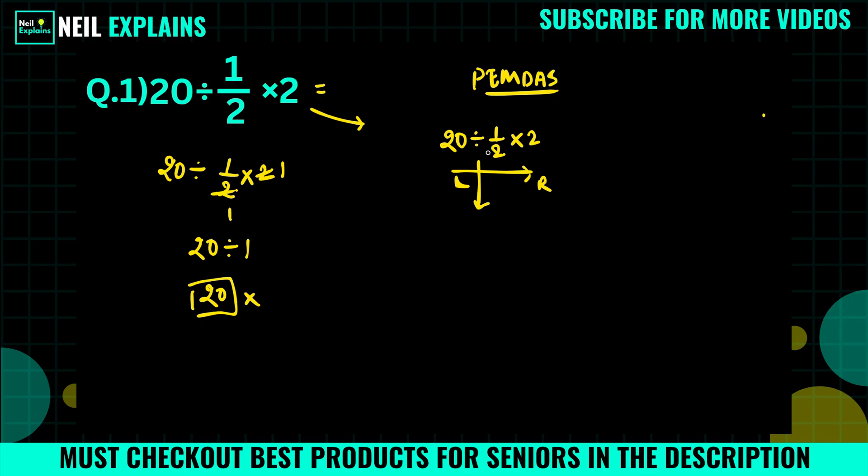Then first we have to solve for this operation: 20 divided by 1/2. To solve this, what we have to do? We have to apply the KCF rule. What KCF stands for? Keep, Change and Flip.